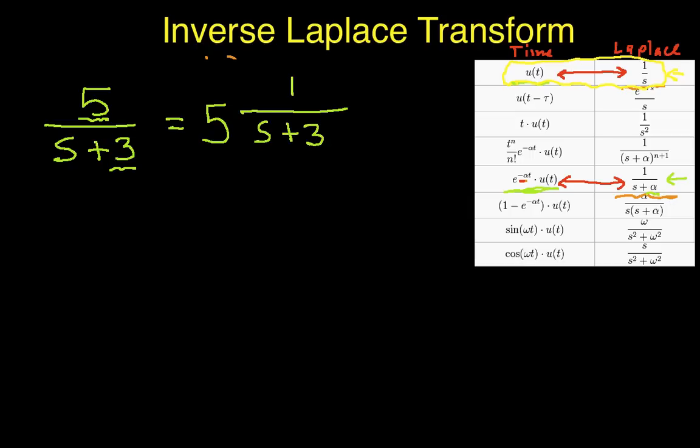Now, we know from the table that the s plus 3 transforms to e to the minus 3t u of t. Again, that's this transform pair.